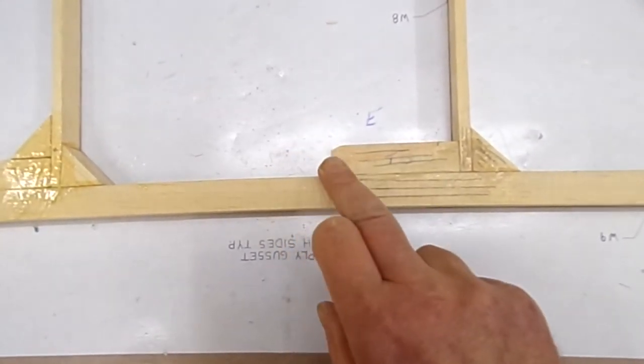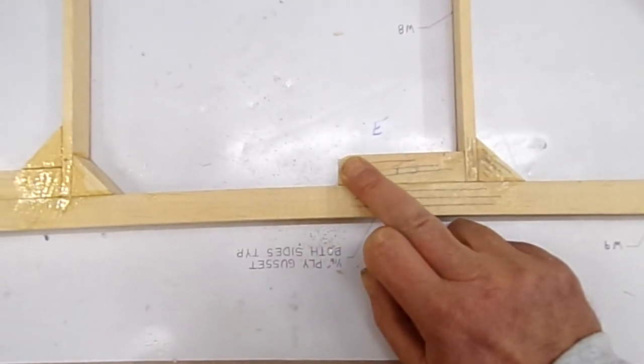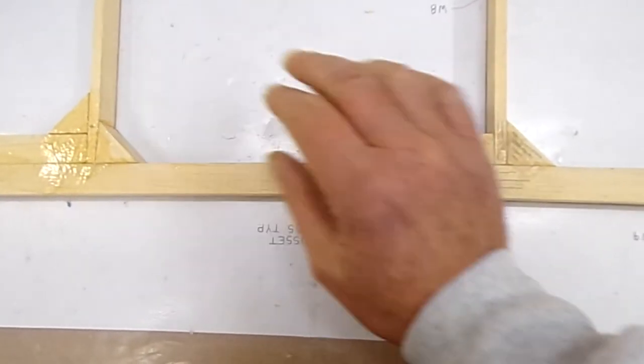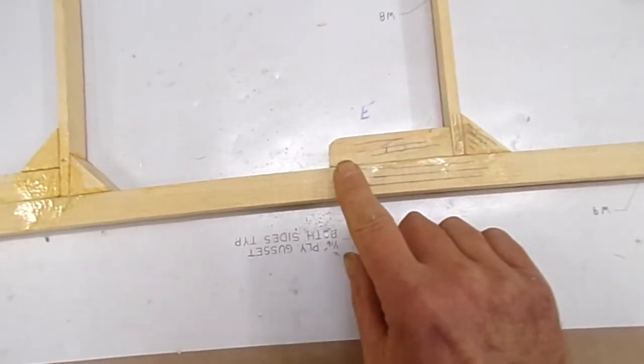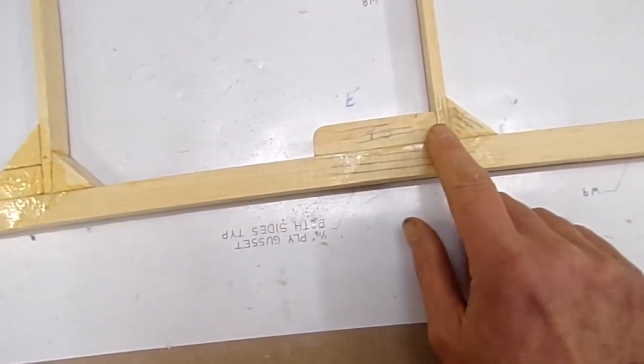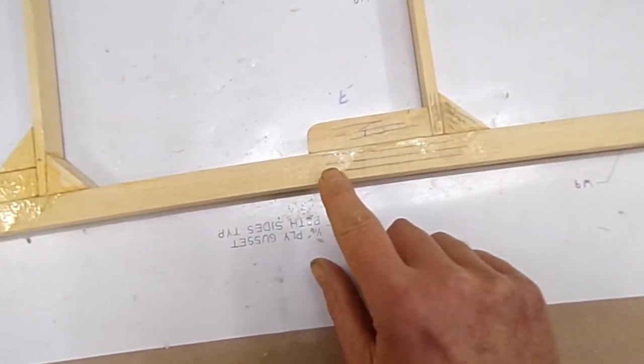I've rounded this corner off just here because the covering goes over it. I don't like a sharp corner going against covering. And then I've drawn on here the direction of grain just to point some things out.